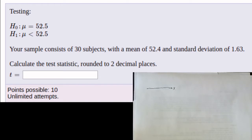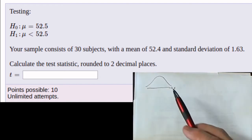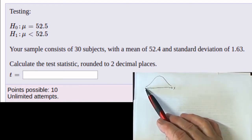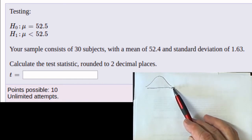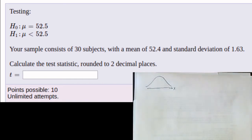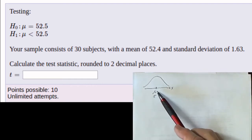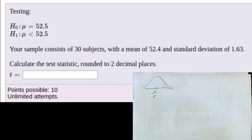When we look at the three-distribution diagram, in the first distribution we're thinking of some random variable that happens to be a numerical random variable. We're interested in the distribution of that random variable. It is to our advantage if it happens to be normally distributed, but that's not essential. This random variable will have a mean and a standard deviation, which we usually don't know.